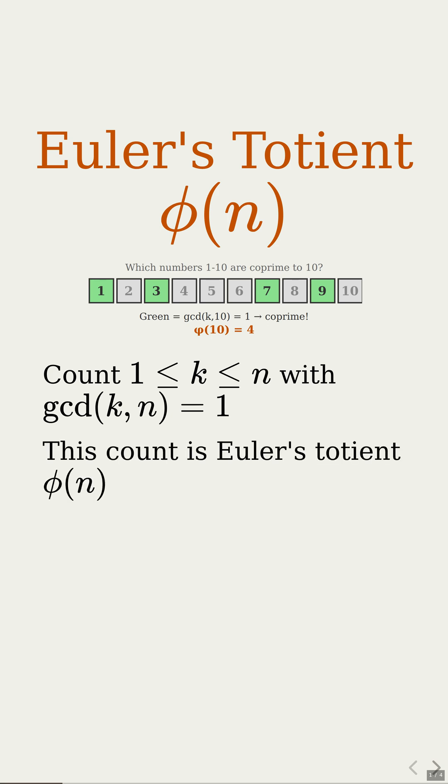Exactly. That count is a famous function called Euler's totient, which we say as phi of n.